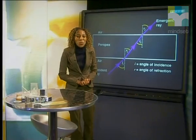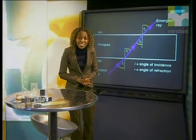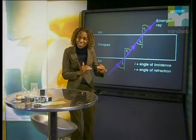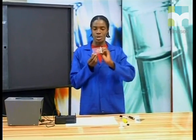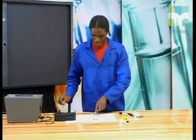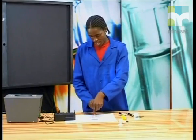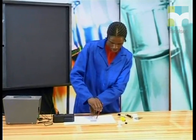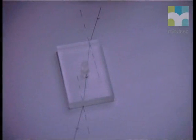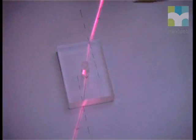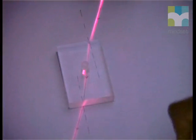We're going to investigate what happens as we change the angle of incidence of light as it moves from a medium of high optical density to low optical density. Today we're going to investigate how light travels through a rectangular perspex block. I'm going to put the block onto a piece of paper, draw a mark around it so that once we've done the investigation we can measure angles. Now I'm going to shine the light through the perspex block, and I've already marked the path where the light travels.